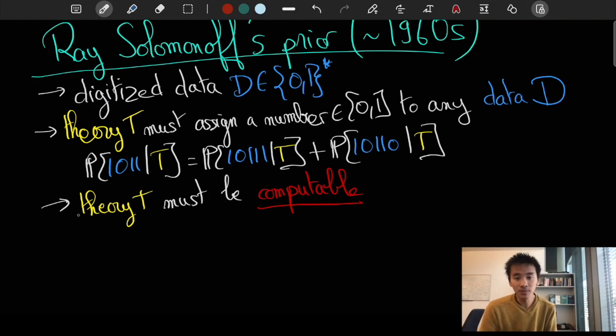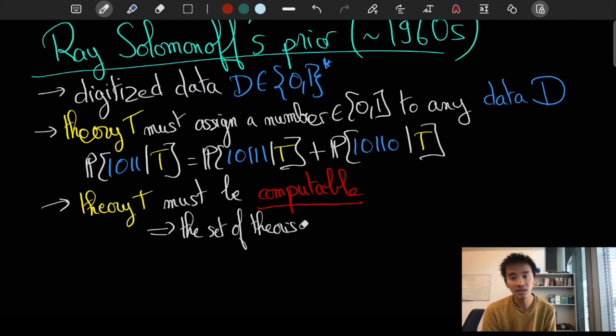As it turns out, this simple condition actually severely restricts the number of theories that are worth considering. Namely, we now have to restrict ourselves to a set of programs, yet the set of all programs is a countable set. In particular, we have got rid of all possible continuous sets, so there's no longer any need for integrals and other complicated Lebesgue measure stuffs.